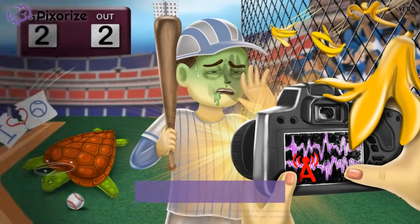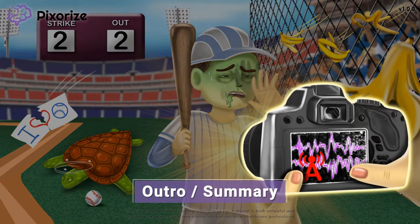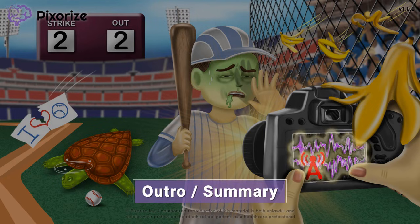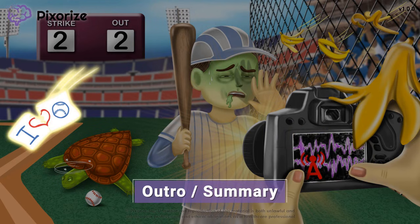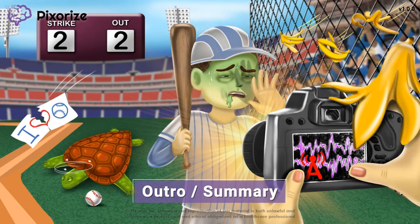Let's quickly review everything we've learned. Digoxin is a cardiac glycoside that works by increasing the strength of the heart's contractions and slowing down the heart rate. It is used clinically to treat atrial fibrillation and heart failure. Digoxin has a narrow therapeutic range, and side effects are seen with serum levels above 2 nanograms per milliliter.